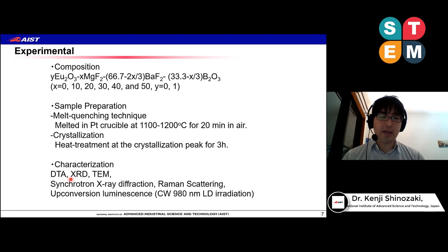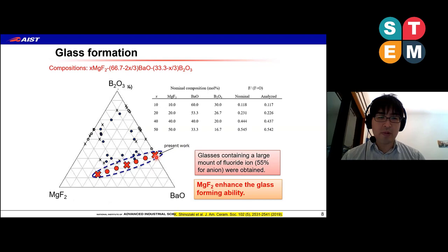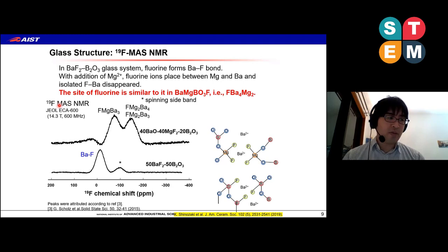We characterize samples by XRD, DTA, synchrotron X-ray diffraction, Raman, and so on. Here shows the produced composition. Sometimes the fluoride evaporates during melting, but by analysis the fluoride loss is very small. In the present work we could produce this composition — for example, x = 10, 20, 14, 15. This glass-forming region is much larger than the oxide case of barium oxide magnesium fluoride. We can expand the glass-forming region by addition of fluoride, and we can produce a large amount of fluoride-ion-containing glass by this technique.